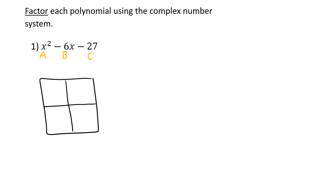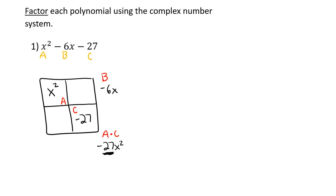We have to find combinations. A is going to go here, C is going to go here, A times C goes outside the box, and B goes outside the box up top. We put x-squared here, then 27 here, and negative 6x there. We take A and C and multiply them together to make negative 27x-squared — that's what we need to figure out the combination for.